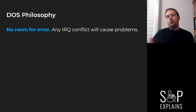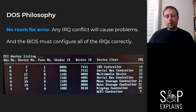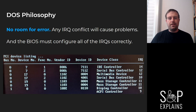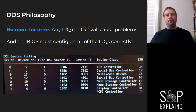The DOS philosophy is that there's no room for error. If you have any kind of conflict, there's going to be problems. When you boot up your system, it probably will show in the BIOS the IRQs that it's assigned. Any case where you see duplicates, you might have problems.